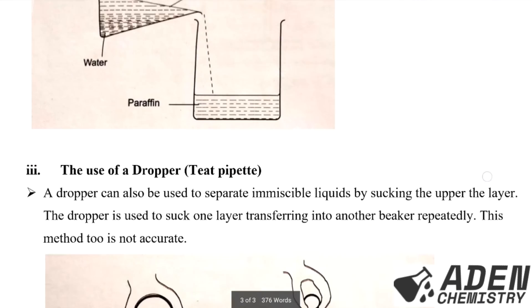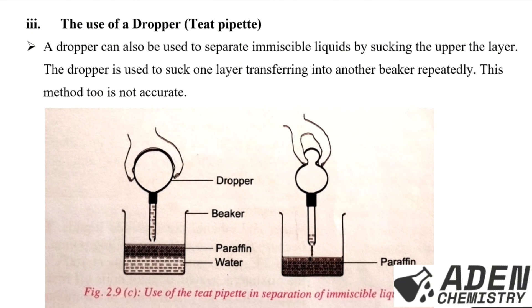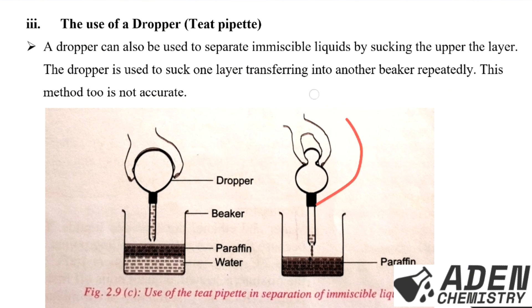The third method of separating immiscible liquids is the use of a dropper. A dropper can also be used to separate immiscible liquids by sucking the upper layer, transferring it into another container repeatedly. This method, too, is not accurate. This is the illustration of how to separate immiscible liquids by the use of a dropper.